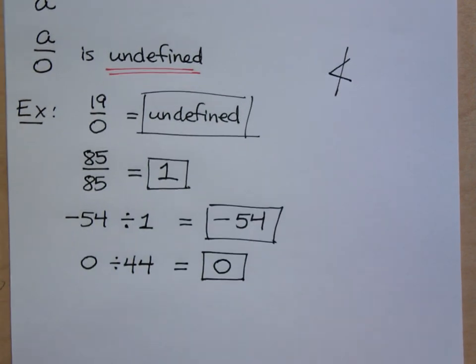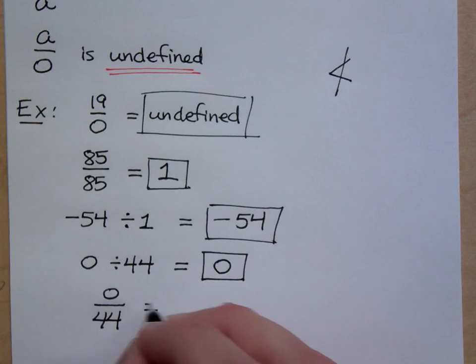You know, you can rewrite this another way if you like looking at it more in a fraction format. You could say this guy is zero over 44, so you can clearly see, oh okay, I'm dividing by 44, so my answer is still zero.